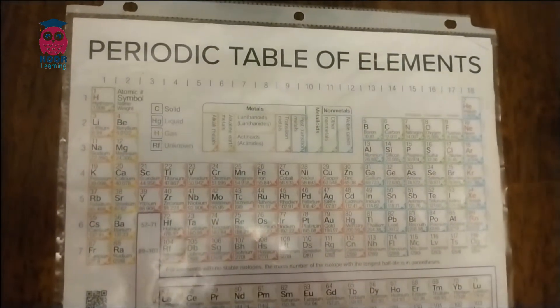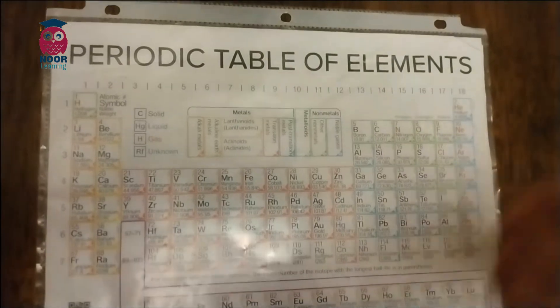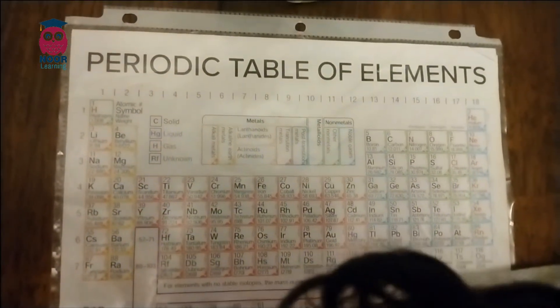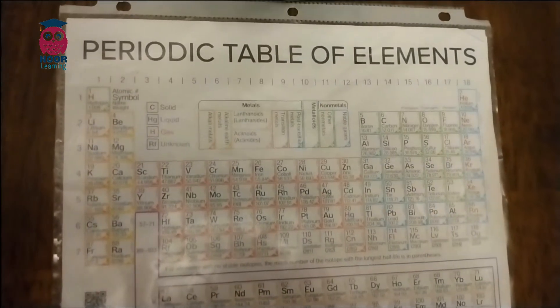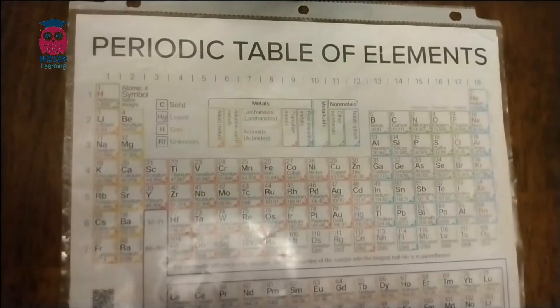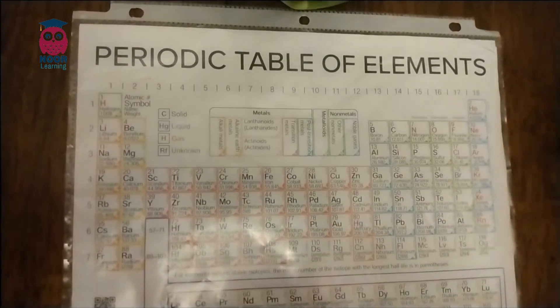This is the Periodic Table. Noble gas is stable. Halogens and alkali react aggressively. We'll see how they're used in real life, metals to the right.